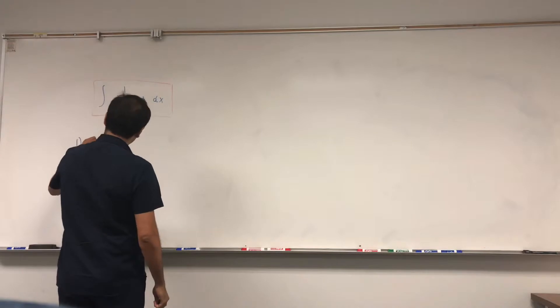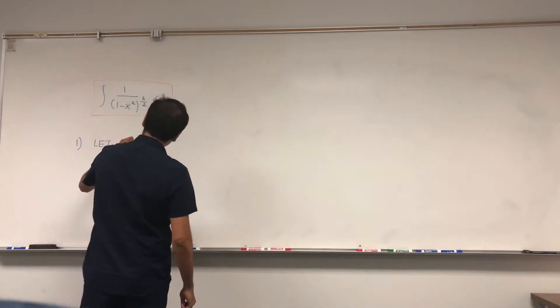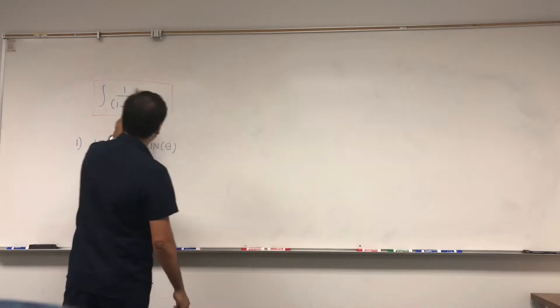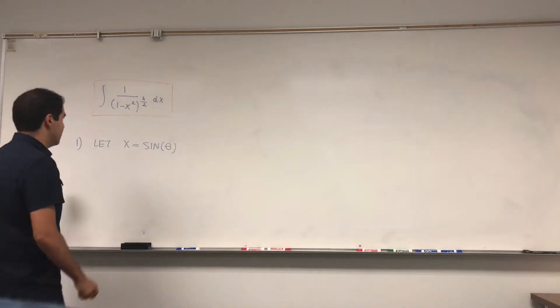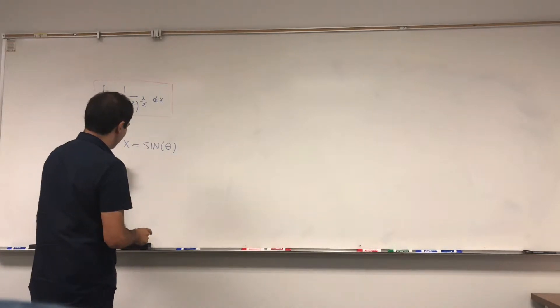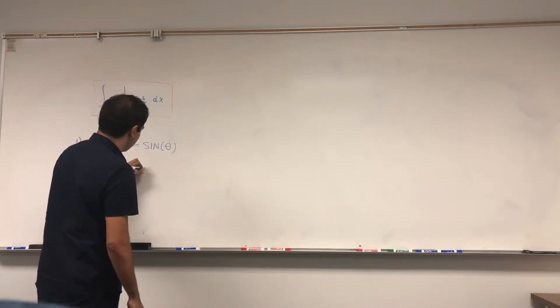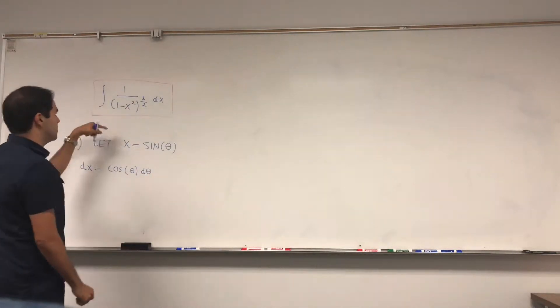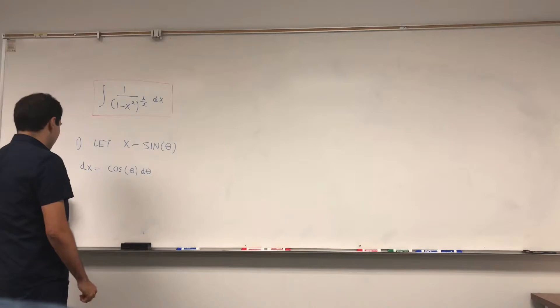Let's use the trig substitution x equals sine of theta, and let's try to plug everything in. First of all, dx becomes the derivative of that, cosine of theta d theta. Let's see what happens to the square root of 1 minus x squared cubed.